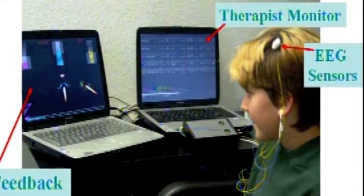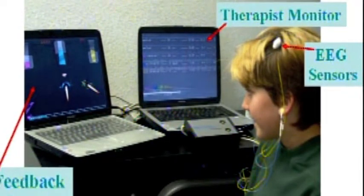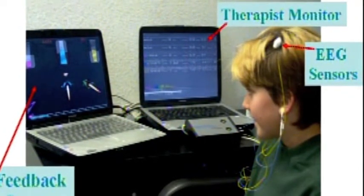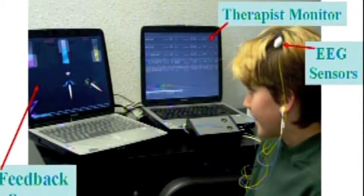As the game runs, he's trying to get the middle rocket to move forward, that's the reward band, and to have the rockets on the right and left side stay back, those are the inhibit bands.